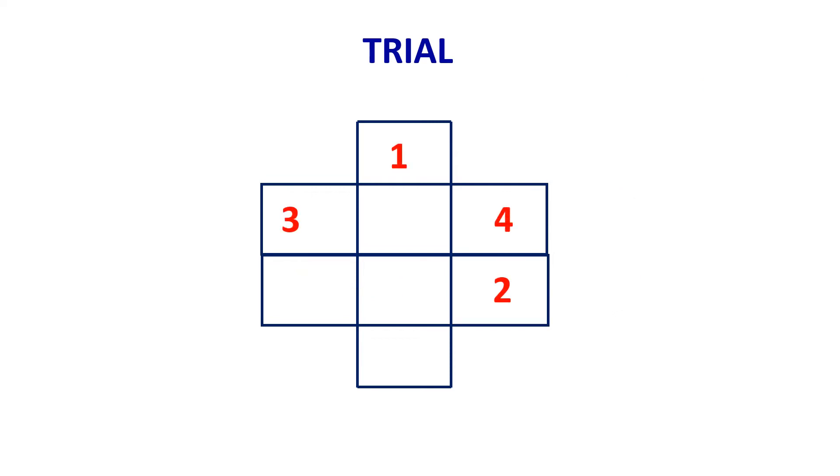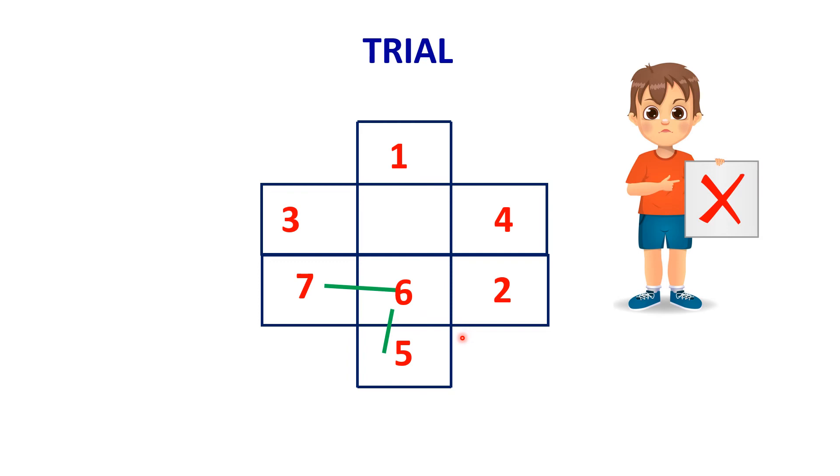Or else, if you are writing like this, 5, 6, and 7, this is also wrong because as per the rule, no two consecutive numbers should be side by side, adjacent or diagonally placed. If we observe, 6 and 7 are adjacent to each other, consecutive numbers. Similarly, 5 and 6 here. So this is also wrong. You should not place the numbers in this manner.